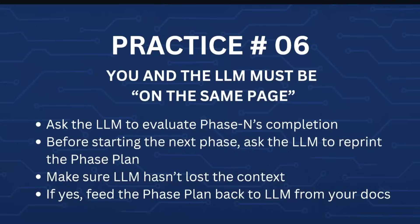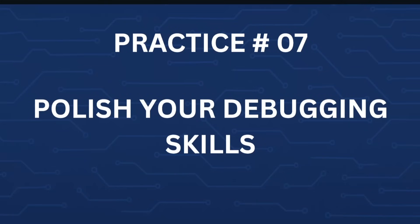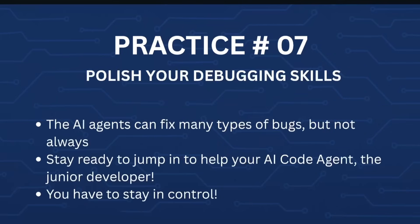But still, if things have messed up somehow, then comes practice number seven to your rescue: polish your debugging skills. AI agents and LLMs can fix many types of bugs, but not always. Stay ready to jump in and help your AI code agent — treat it like the junior developer it is. You have to stay in control, so your debugging skills are very much needed.